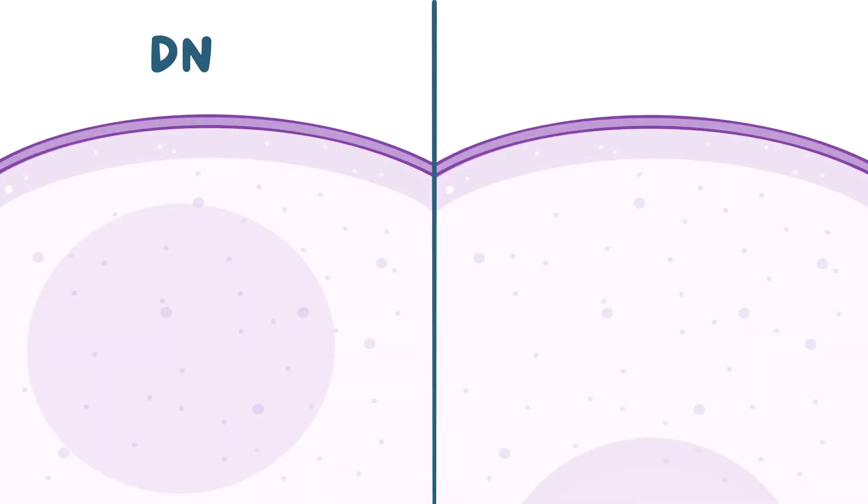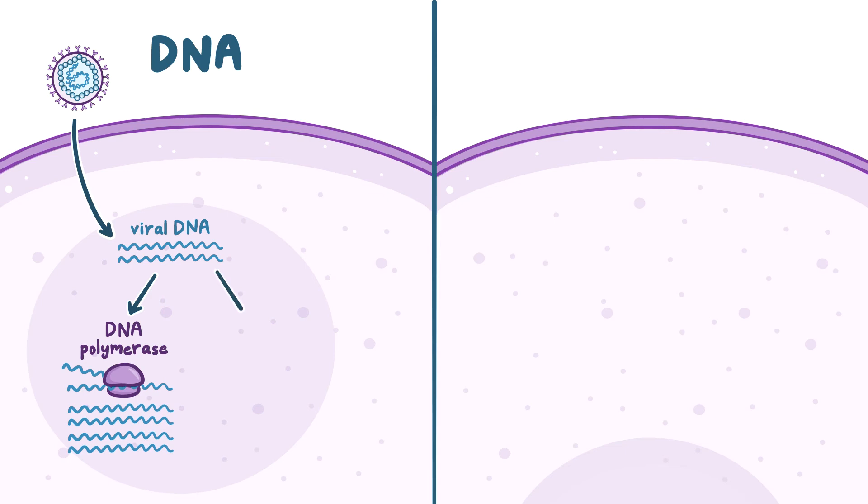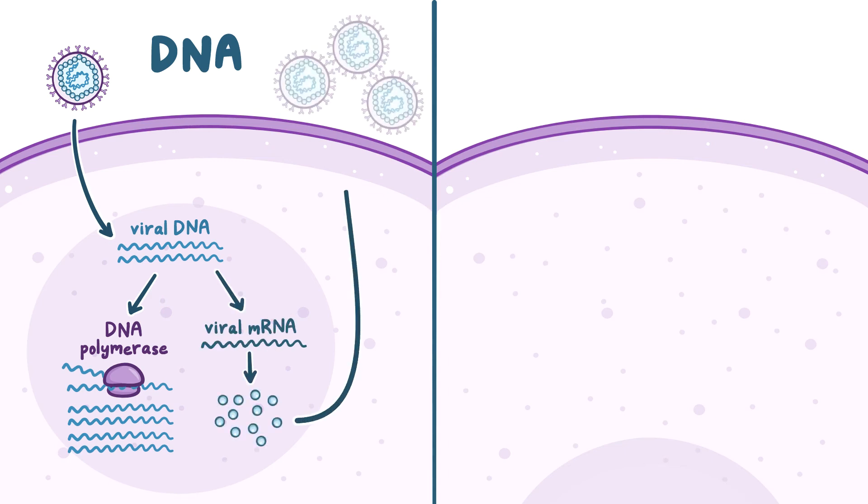In DNA viruses, the viral DNA enters the nucleus and uses the host's DNA polymerase to create more copies of itself as well as viral mRNA that gets translated into viral protein.